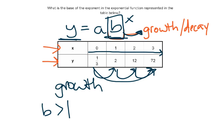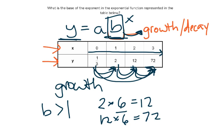How much is it growing by? Well, let's see. We go from 2 to 12. 2 times 6 equals 12. We go from 12 to 72. 12 times 6 equals 72. Even our first value, 1 third to 2. 1 third times 6 equals 2. So we are growing by a factor of 6 every single time. Our base in this exponential function is equal to 6.